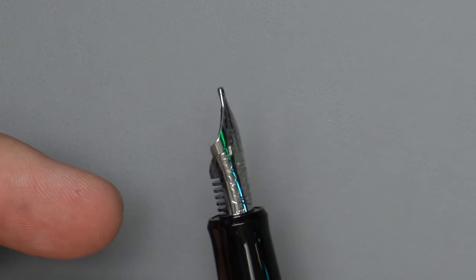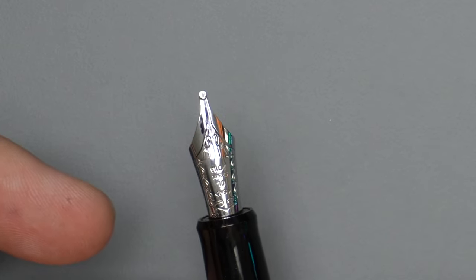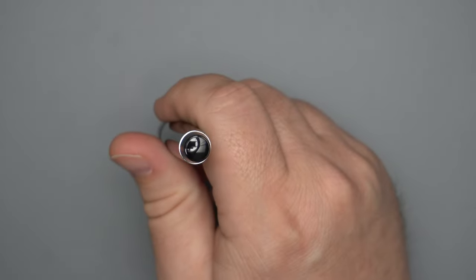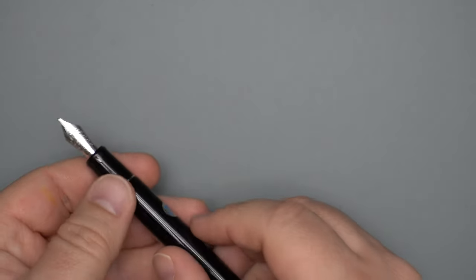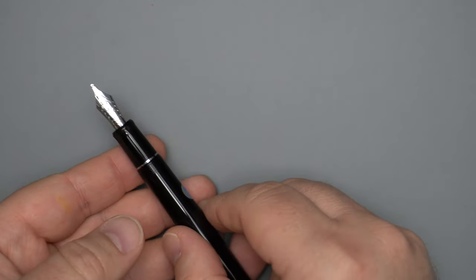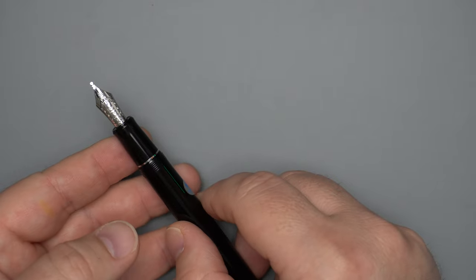And so what you end up having here is sort of an italic-y sort of nib, which will also allow you to write with just the tip of it, sort of very perpendicular to whatever your subject is, because you might be writing on an easel writing notes. So let's go ahead and take a look at how this thing writes.